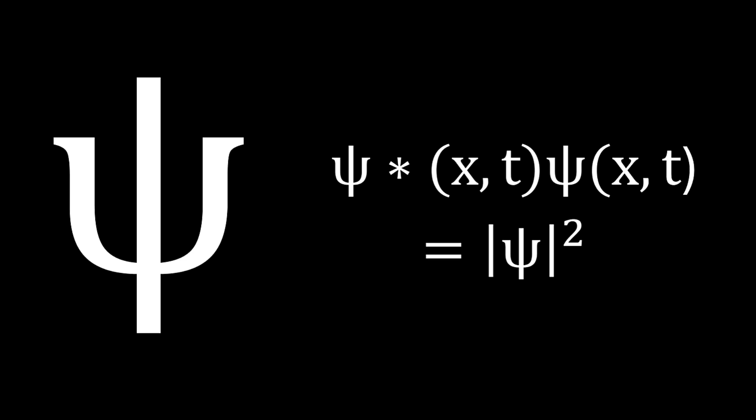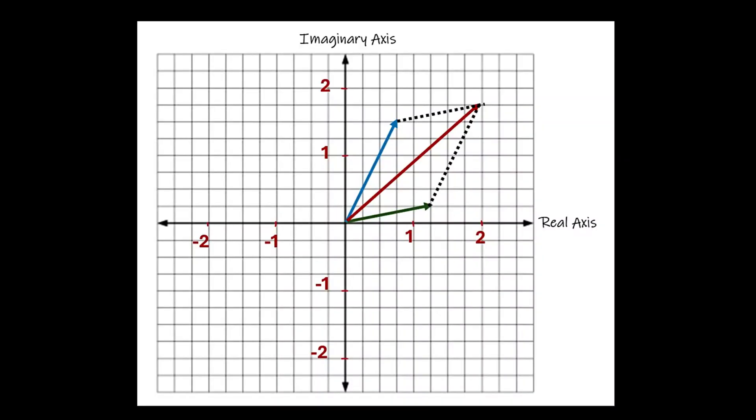Imagine a world without complex numbers — in that world quantum physics would not exist. Complex numbers can be represented as vectors, and using complex numbers we can easily perform operations like addition and subtraction of vectors. Complex numbers can also be used to represent simple harmonic motion, and we can easily superpose simple harmonic motions using them. They are also very useful tools in studying alternating currents.